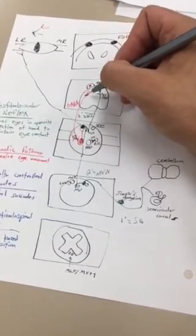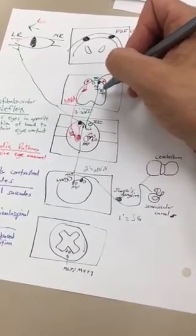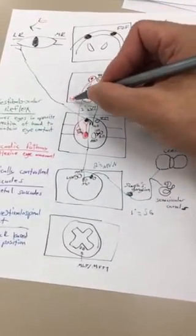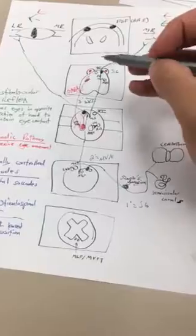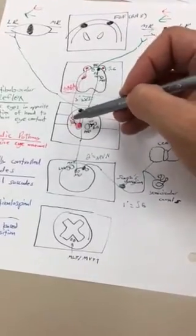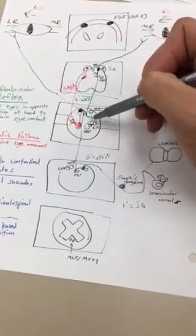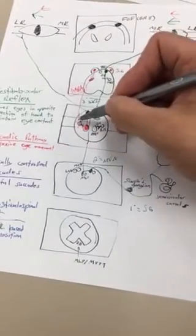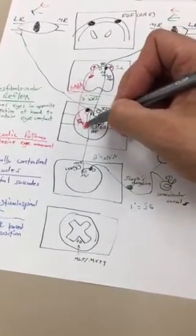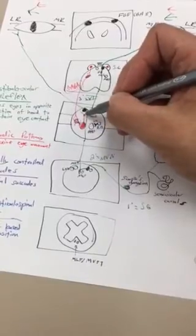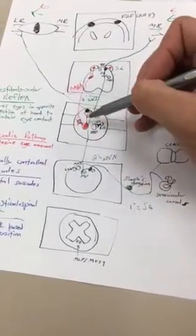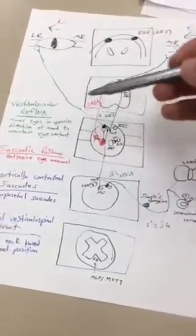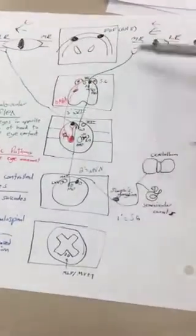That will synapse on this structure here, which is our mesencephalic reticular formation. When you turn on the mesencephalic reticular formation, it's going to release GABA, which is an inhibitory neurotransmitter, on our omnipause cells. Remember, these have been tonically inhibiting PPRF with glycine. So by turning off the omnipause, you turn on the PPRF. The PPRF then is able to activate your abducens nucleus and then follow the rest of the pathway, turning the eye right.